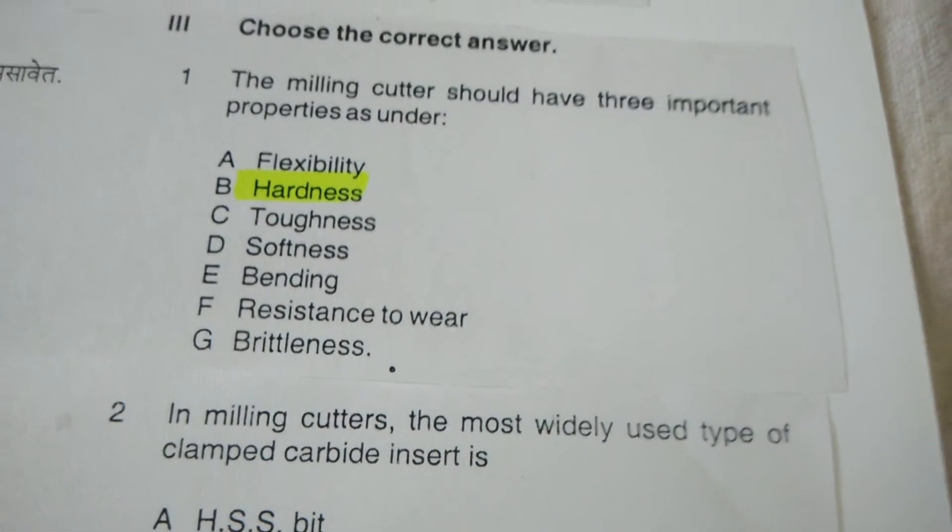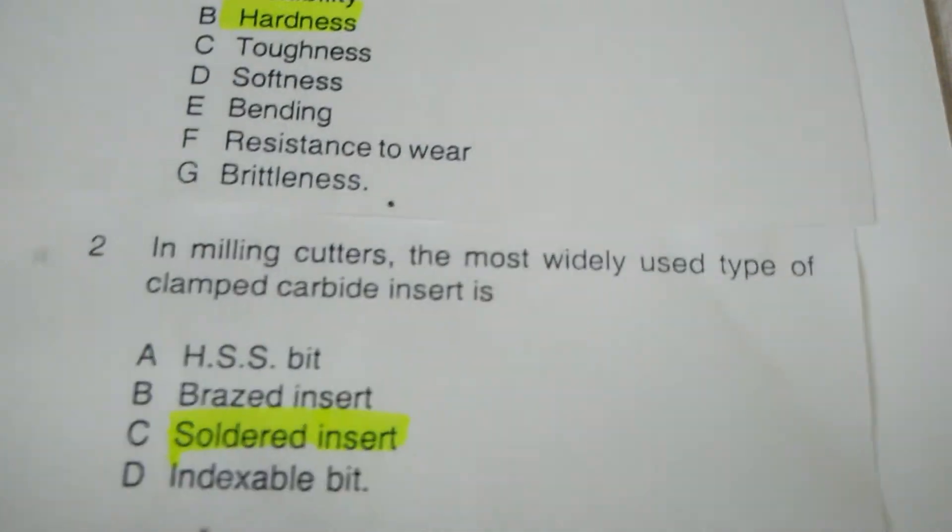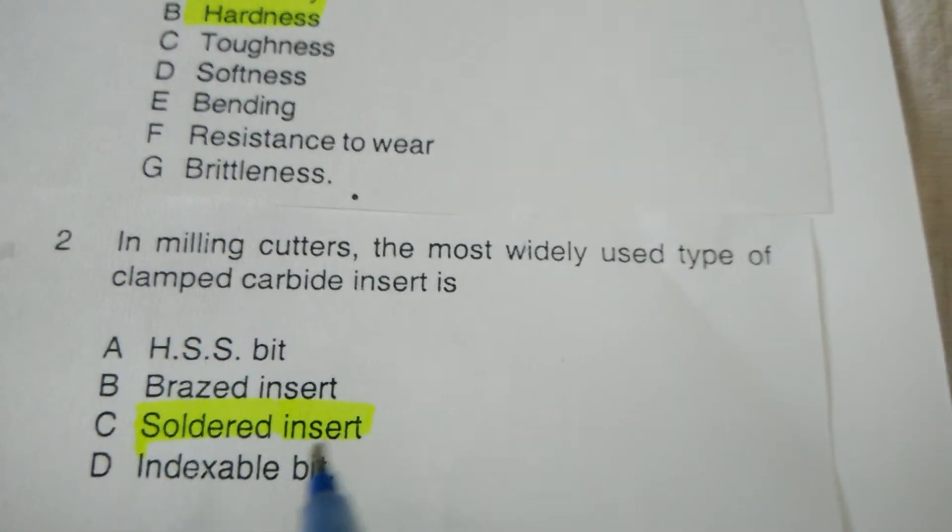Next objective: In a milling cutter, the most widely used type of clamping carbide insert is — high-speed steel bit, braze insert, shoulder insert, or indexable bits? The correct answer is shoulder insert.